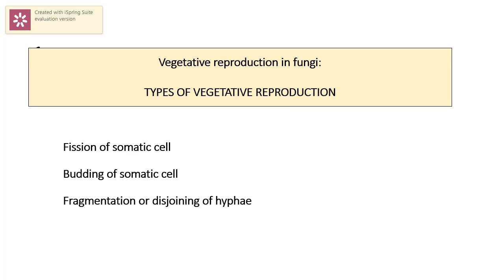We first come to vegetative type of reproduction. It is a form of asexual reproduction that mainly occurs in plants and fungi, in which multicellular structures become detached from the parent plant and develop into new individuals that are genetically identical to the parent. In fungi there are three types of vegetative reproduction: fission of somatic cell, budding of somatic cell, and fragmentation.